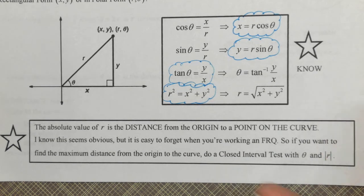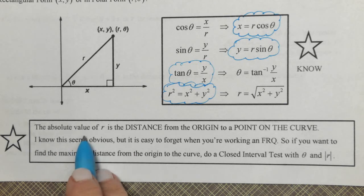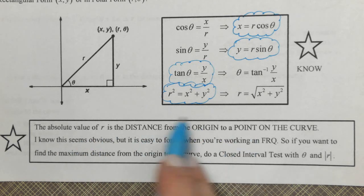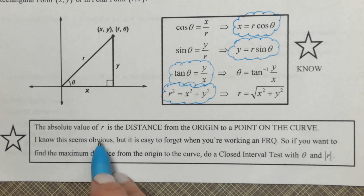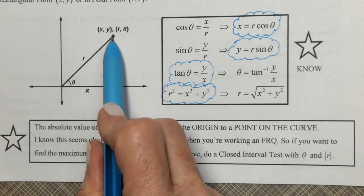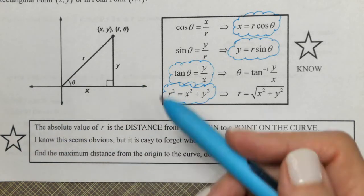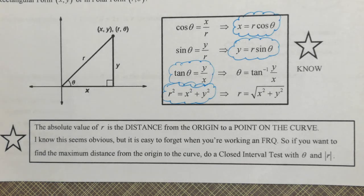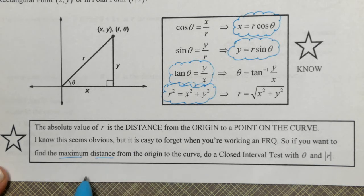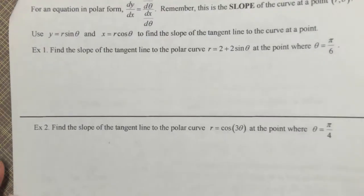Another thing you need to know: the absolute value of r is the distance from the origin to a point. We need absolute value because r can be negative. The distance is |r|, not just r — it is just r as long as r is positive. We'll need to remember that when finding the maximum distance from the origin to a curve; you'll need |r| for the closed interval test on theta.